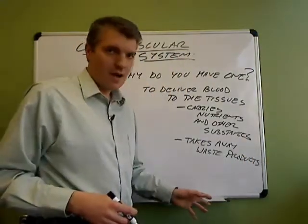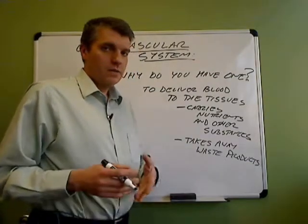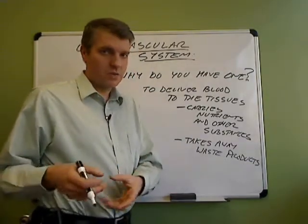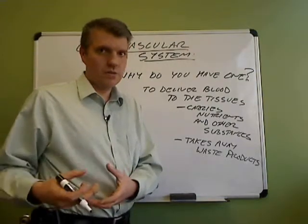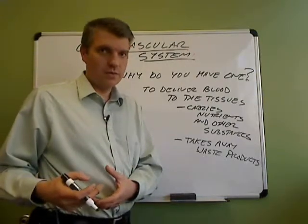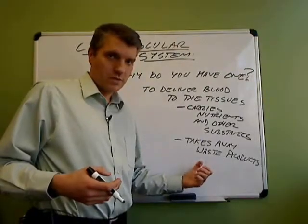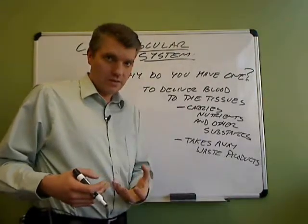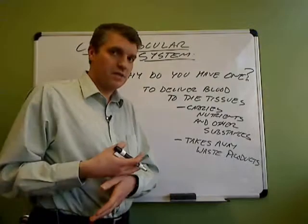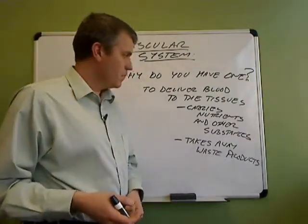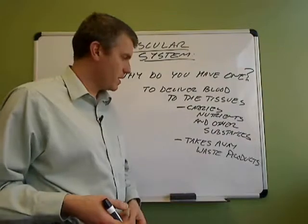Waste products like carbon dioxide — the other respiratory gas. The cells and tissues take in oxygen and use it to make energy from food molecules, and they produce CO2 as a result of that cellular metabolism. The CO2 becomes a waste product that has to be carried away from the tissues.